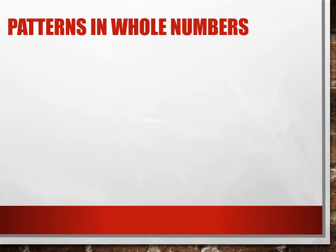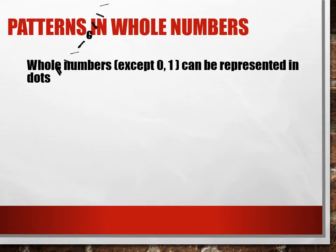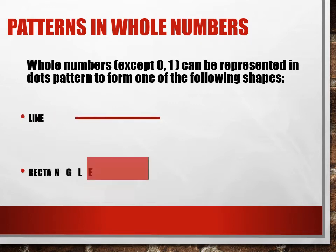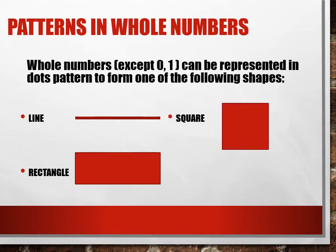The whole numbers except 0 and 1 can be represented in dot patterns to form one of the following shapes: line, rectangle, square, and triangle.